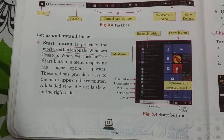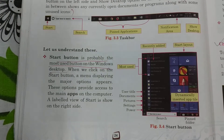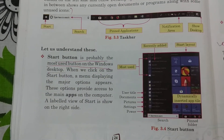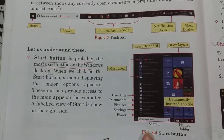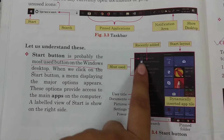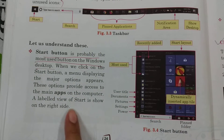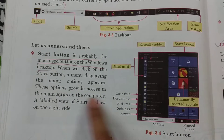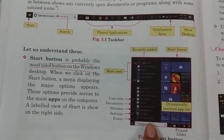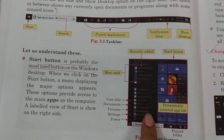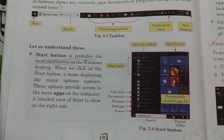Next is the start button. This start button, located at the extreme left, is probably the most commonly used button on the Windows desktop. When we click on this start button, a menu opens from where we can choose our options. These options provide access to the various apps that are present inside the computer. By scrolling with the mouse we can scroll up and down and choose the one we want to start.